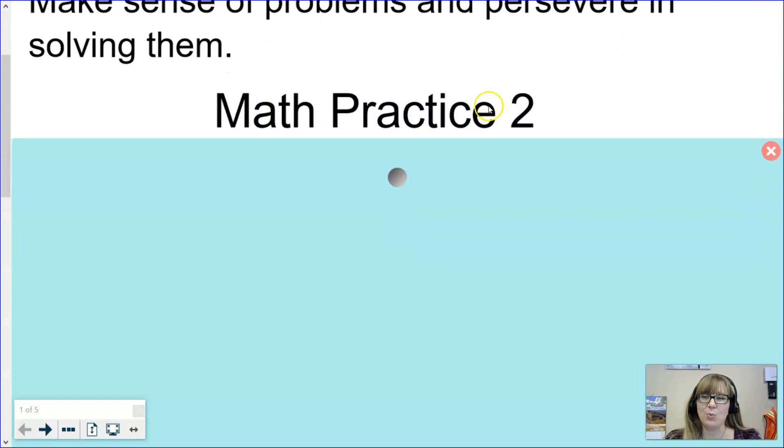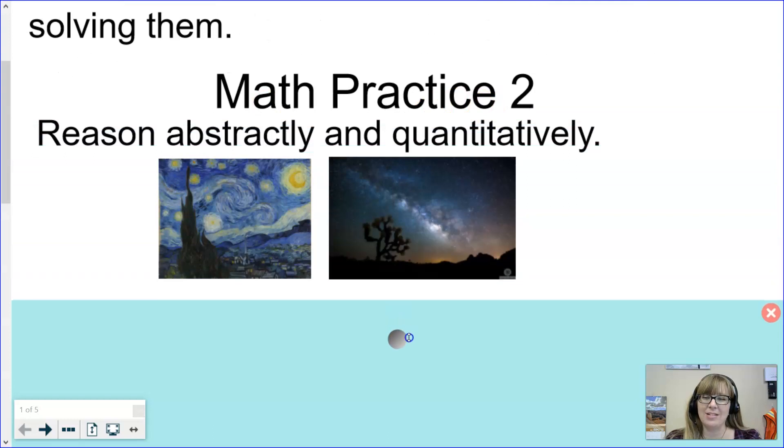Math practice two is reason abstractly and quantitatively. To reason abstractly is to use equations and symbols to help us solve quantitative or real-life problems. Whenever we solve a problem and get an answer like x equals 7, we need to make sure that we understand what that means in the real world. We can understand that to mean seven dollars per hour.